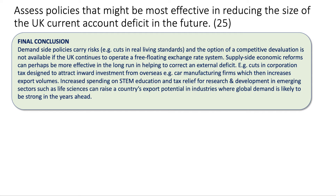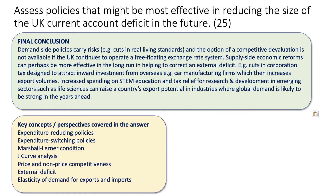Supply-side options include cuts in corporation tax designed to attract inward investment from overseas car-making firms producing and exporting from the UK; increased government investment in STEM education; and tax relief for R&D in emerging sectors such as life sciences, biotechnology, and renewable energy. These can expand a country's export potential, particularly in industries where global demand is likely to be strong in the years ahead. The argument is that demand-side policies risk hitting living standards, so the focus should be on effective, specific supply-side policies in export growth sectors. Key distinctions here are between expenditure-reducing and expenditure-switching policies.